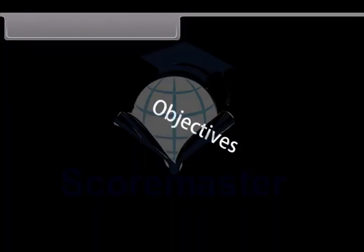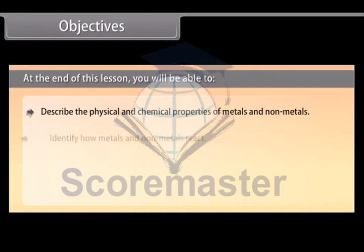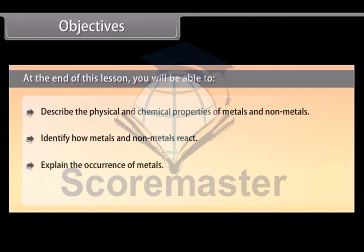Objectives. At the end of this lesson you will be able to describe the physical and chemical properties of metals and non-metals, identify how metals and non-metals react, explain the occurrence of metals, and describe corrosion.